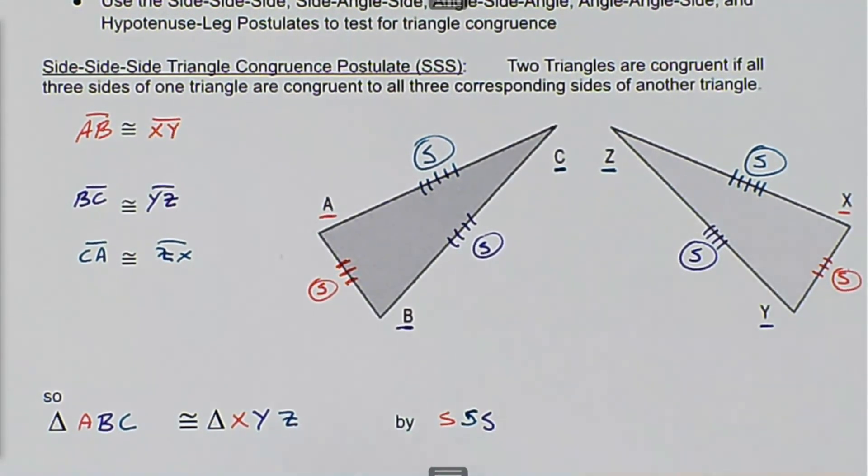There's the triangle congruent statement. Triangle ABC is congruent to triangle XYZ by side, side, side.